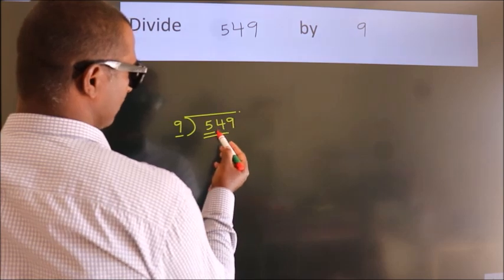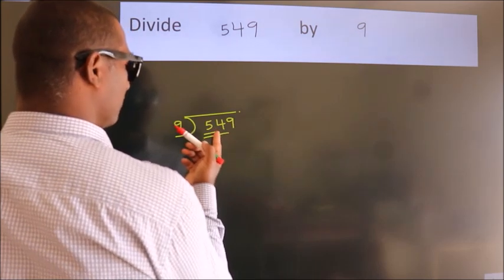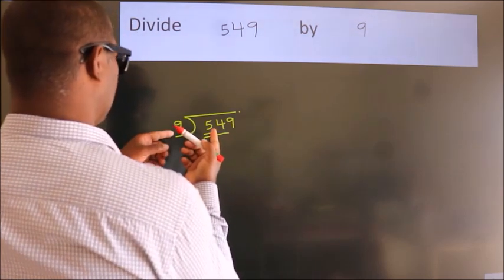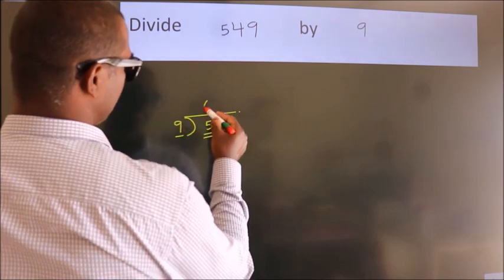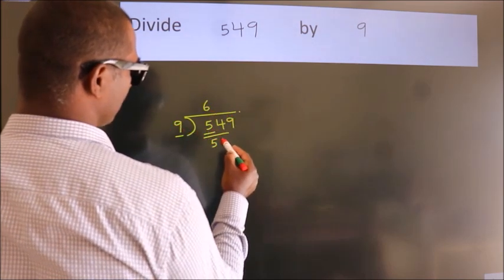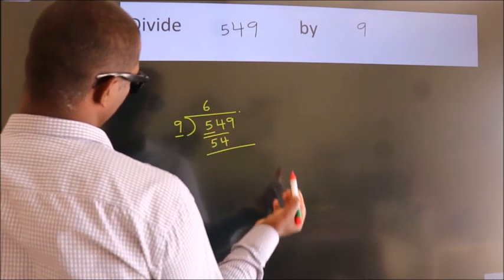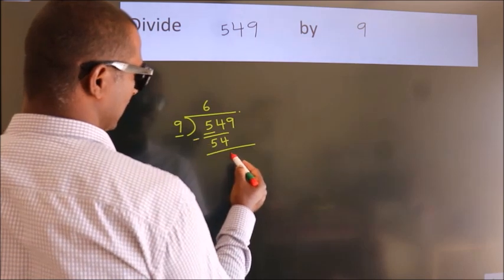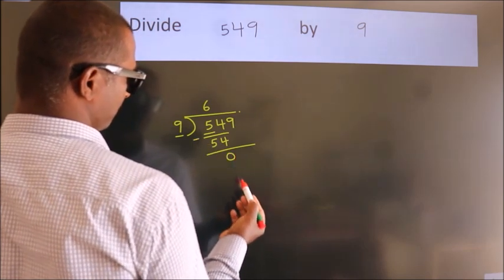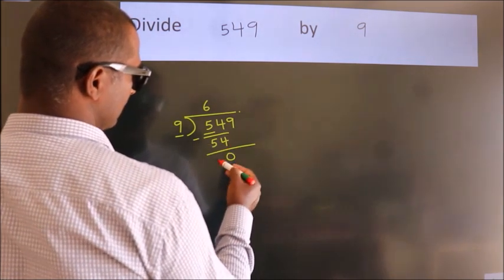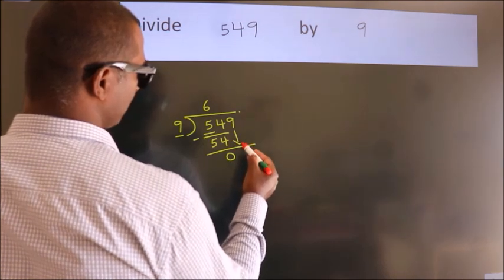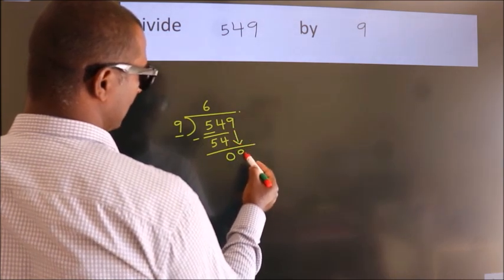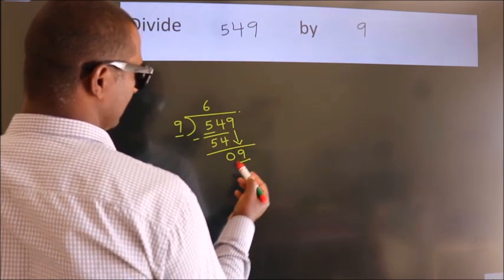54. When do we get 54 in the 9 table? 9 times 6 equals 54. Now we should subtract. We get 0. After this, bring down the next number. 9 down.